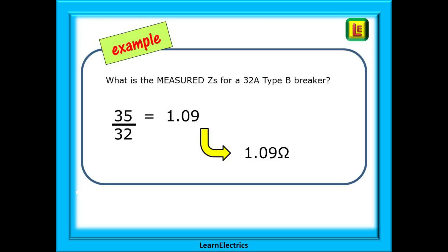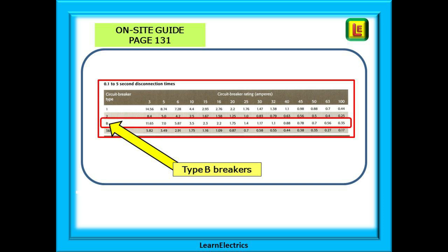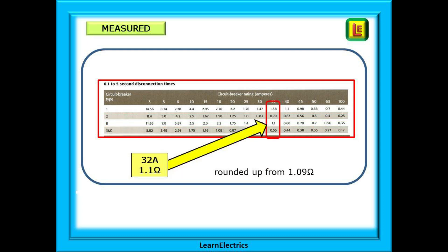To calculate the measured ZS for a 32 amp type B breaker, divide 35 by IN, the size of the breaker. Do the calculation and out pops the answer: 1.09 ohms. Turning to page 131 of the onsite guide, we have table B6. Find the row for type B breakers, then find the column for 32 amp breakers and look up the number — shown here is 1.1 ohms, which is the 1.09 that we calculated, rounded up. Every book will round the numbers up or down by a small amount.